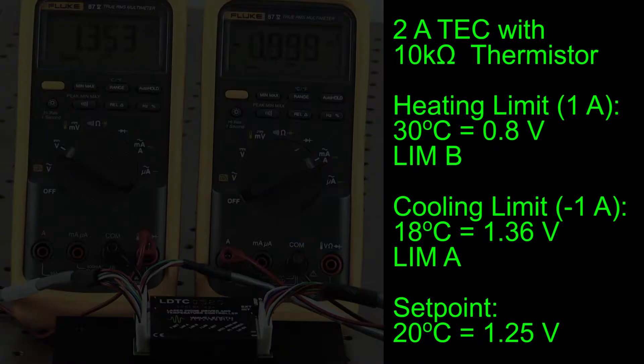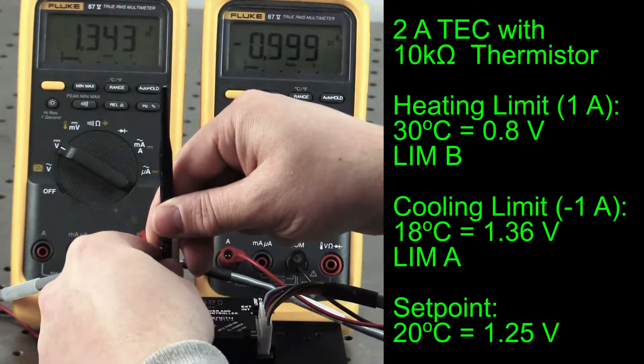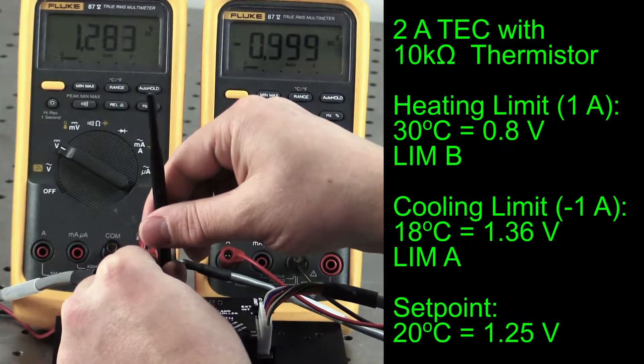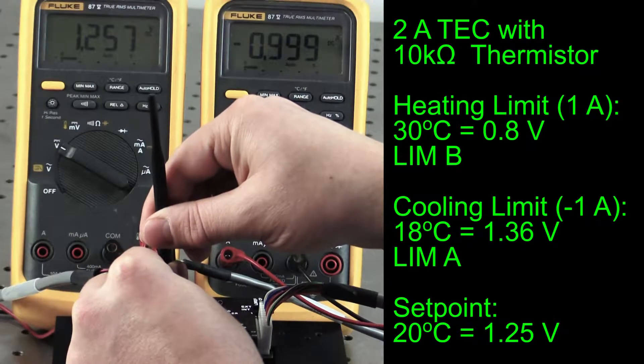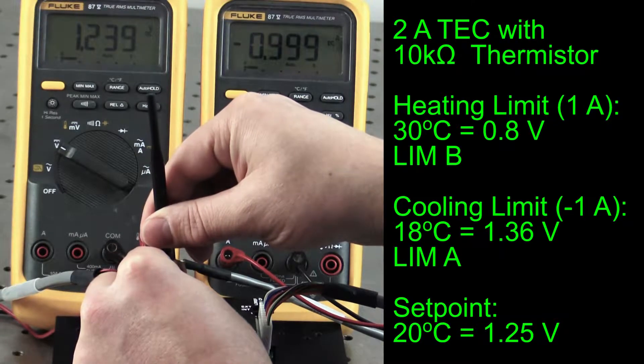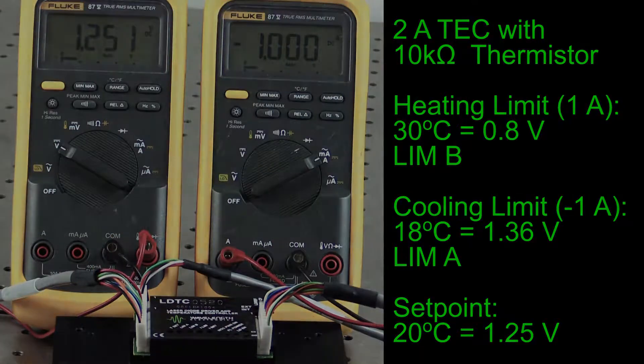With the limit set, we now adjust the temperature set point to the operational temperature of 20 degrees C. The ammeter can be removed at this point. Please note that the procedure for wiring up a resistive heater is different and can be found in the datasheet.